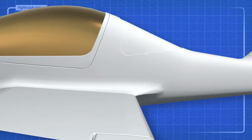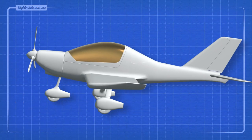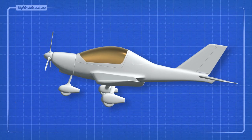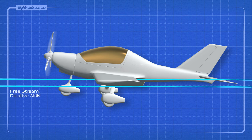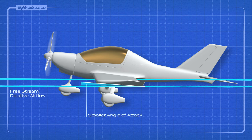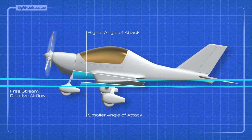A deliberately shaped twist in the wing design is called a washout. The wing is designed in such a way so that in flight, the angle of attack at the wing tip is smaller than the angle of attack at the wing root.